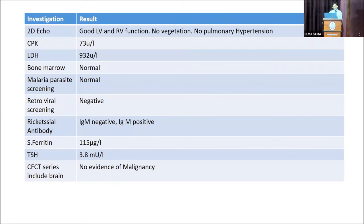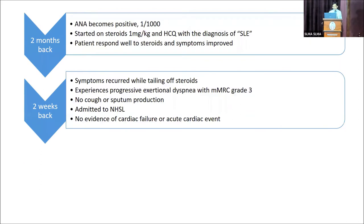She was seen at a nearby tertiary care center and evaluated for pyrexia of unknown origin. Clinical examination was unremarkable, but investigations revealed strongly positive rickettsial IgG antibodies, so she was treated with IV chloramphenicol without response. In the full blood count there were low-normal leukocyte counts with mild anemia, high inflammatory markers with ESR and CRP, and initial chest X-ray was normal. Septic screening, TB screening, and renal/liver profiles were normal. 2D echocardiogram excluded infective endocarditis, CPK was normal but LDH was on the high side. Bone marrow was normal.